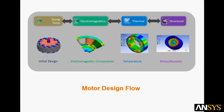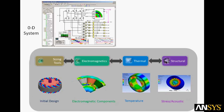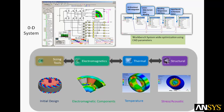ANSYS provides a complete design flow that progresses from analytical design sizing options to rigorous electromagnetics design to fully coupled electromagnetic, thermal, stress, and acoustic physics modeling. Finite element analysis of the electromagnetics is the foundation for creating physics-based models that are used with 0-D systems models. The ANSYS Workbench can be used to manage multiphysics design and perform system-wide optimization.